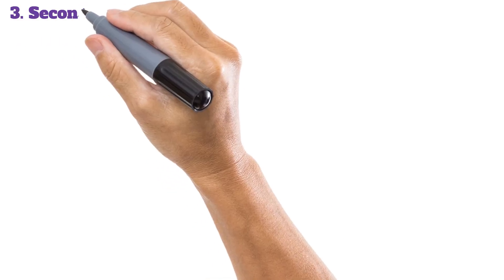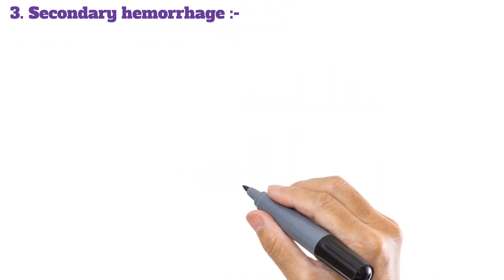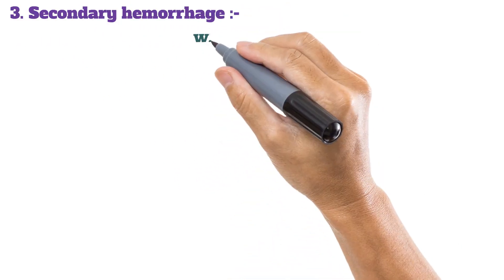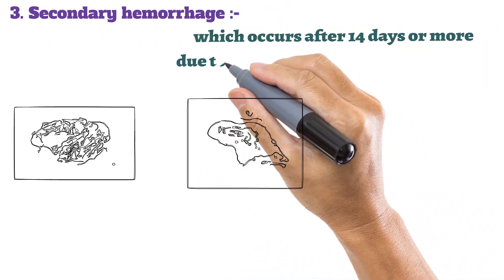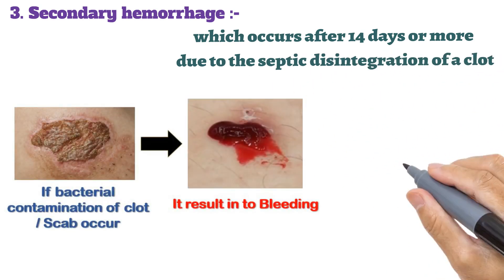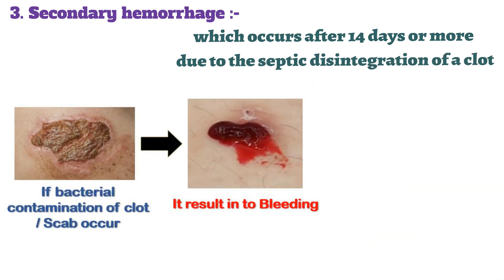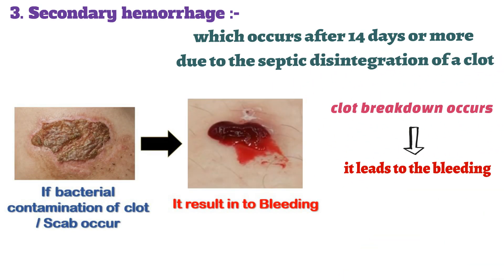The last type is secondary hemorrhage, which occurs after 14 days or more due to the septic disintegration of a clot — meaning clot breakdown occurs and leads to bleeding, as shown in the picture.